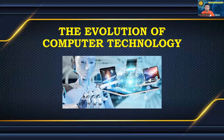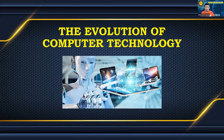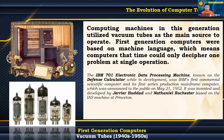The evolution of computer technology is often divided into 5 generations. Each generation is typified by a significant technological expansion which changed the way computing machines operate. Computing machines in the first generation utilized vacuum tubes as the main source to operate, and were based on machine language, meaning computers could only decipher one problem at a single operation. The IBM 701 electronic data processing machine was IBM's first commercial scientific computer, announced to the public on May 21, 1952.